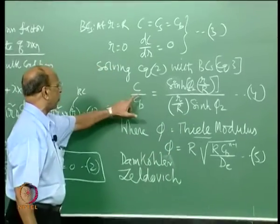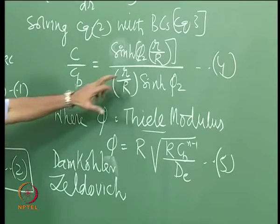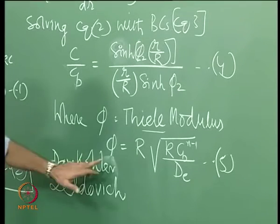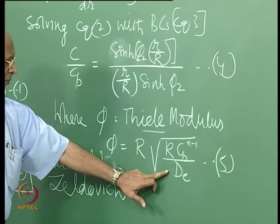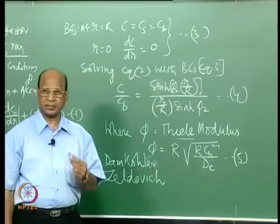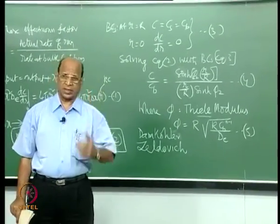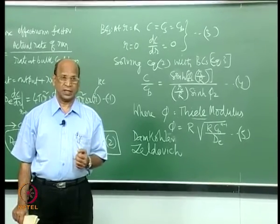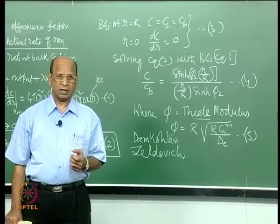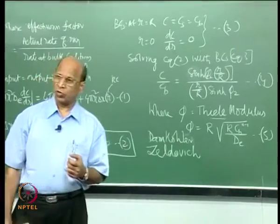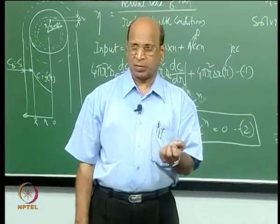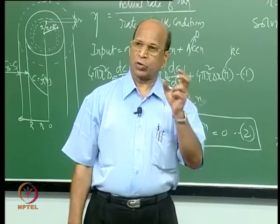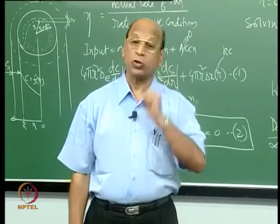You can plot C/C_B versus r/R as a function of φ. The physical significance: if φ is very large — say 200 — diffusion is controlling, meaning reaction rate is very fast and D_e is small in the denominator. Large φ means mass transfer through the pores is controlling. Small φ (less than 1) means diffusion is very fast but the reaction rate k is small, so reaction is controlling.